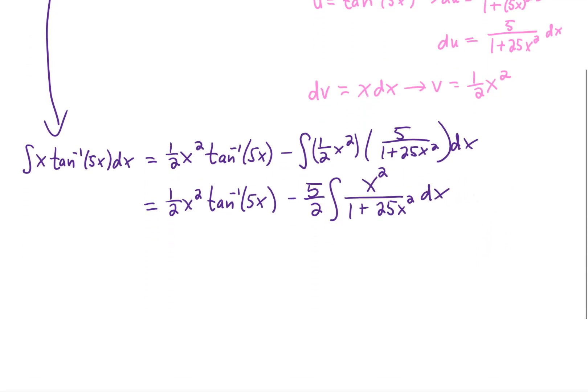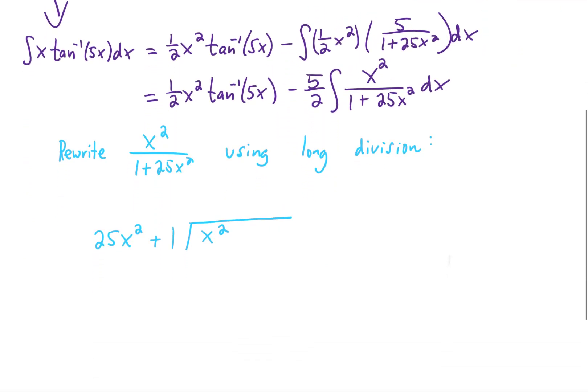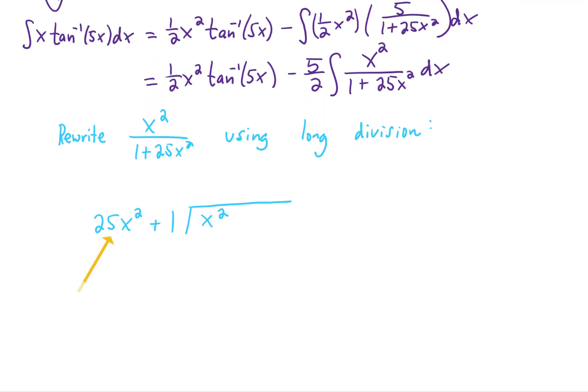So typically what this means is we need to rewrite this integrand using long division. The division problem won't take us too long, and the setup looks like this right here. We need to ask the question, what do we multiply 25x squared by to get x squared? The answer is 1/25th.